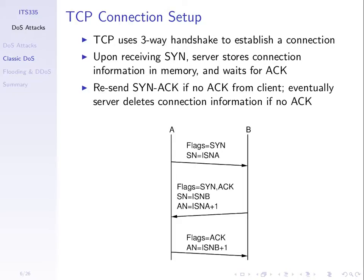Before we send data we establish a connection. The TCP three-way handshake is the general way to establish a connection. Computer A sends a special TCP segment to B with a SYN flag set to synchronise sequence numbers. When B receives that, it sends back a SYN-ACK, acknowledging the one it received and providing its own sequence number. Then there's a final third ACK. So: SYN, SYN-ACK, ACK — that's the typical TCP connection setup.